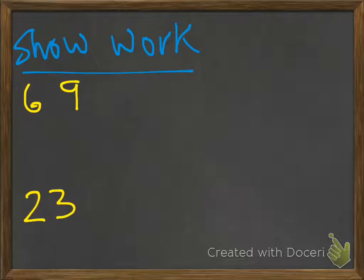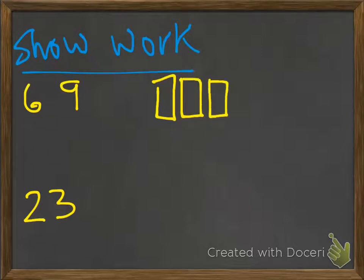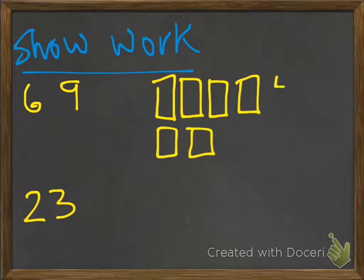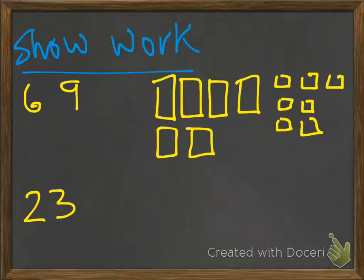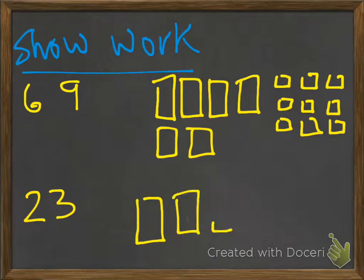So we have 69 and we have 23. And once again, we can use our base 10 blocks. Maybe that will help us. 10, 20, 30, 40, 50, 60, and then we have 1, 2, 3, 4, 5, 6, 7, 8, 9. And then down here we have 10, 20, 1, 2, 3. So those are our numbers.